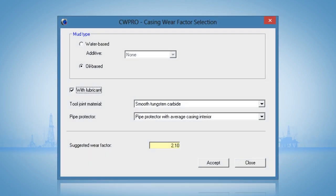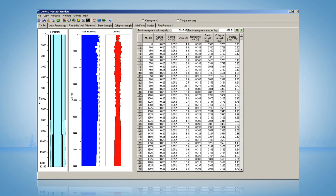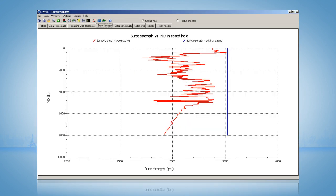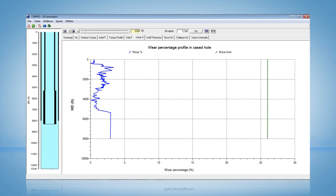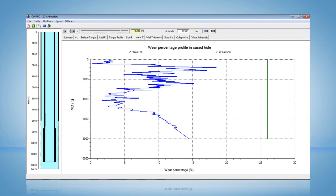CW Pro is equipped with a comprehensive wear factor database. Once the wear volume is obtained, the wear depth can be calculated, and the burst and collapse strengths of the worn casing can be assessed. Casing wear deepens as we drill deeper, as shown here.